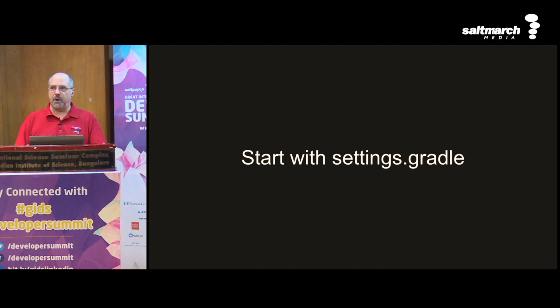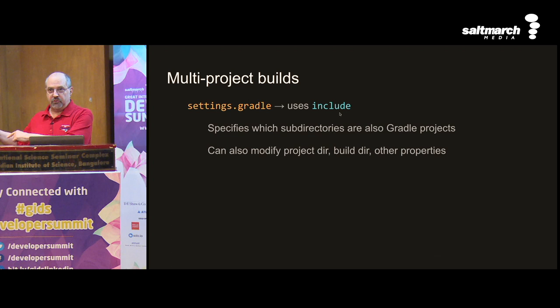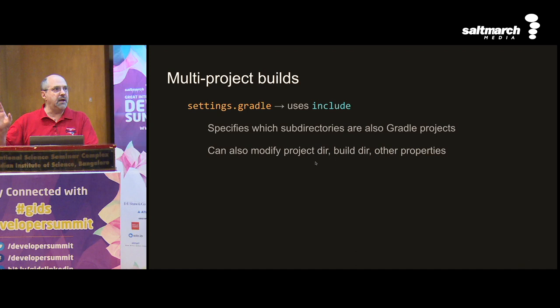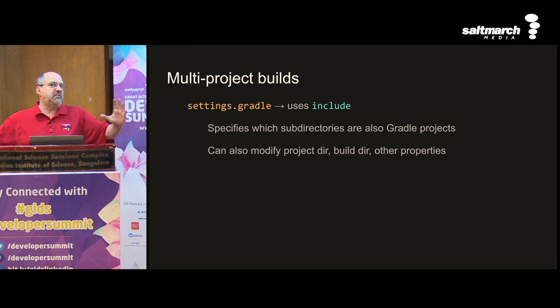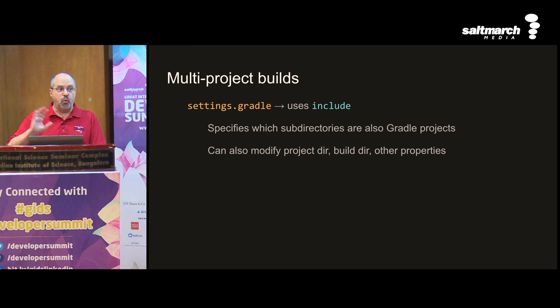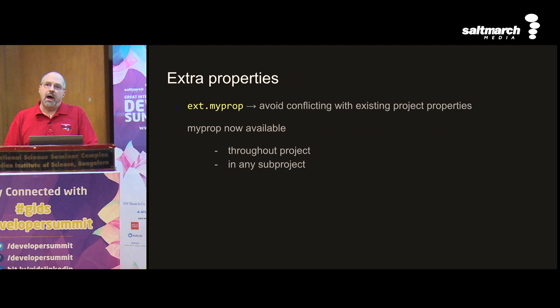When looking at a project you've never seen before, start with settings.gradle or settings.gradle.kts — it's processed at initialization time and identifies which subdirectories are Gradle projects. You can also modify certain things in the settings file that you can't change later, like the name of the build directory — once you're in configuration time, it's too late. There's been a trend to move things like dependency resolution out of build.gradle and into settings.gradle for efficiency, configuring it once and caching it.